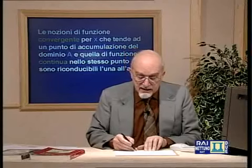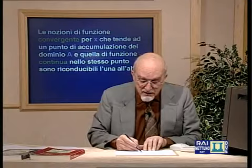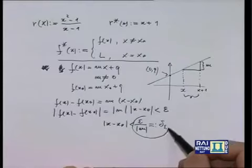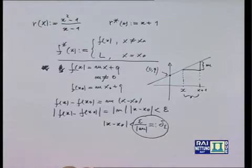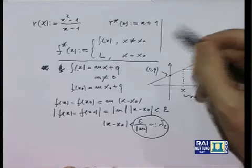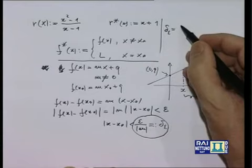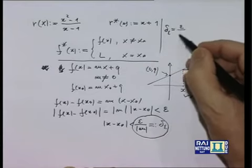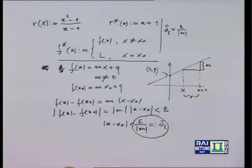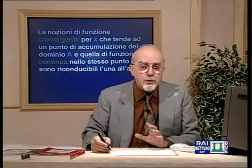Può essere interessante dedicare 30 secondi a considerare questo risultato: delta(epsilon) = epsilon / |m|. Dunque, a parità di epsilon, questo delta(epsilon) è tanto più piccolo quanto più m è grande in valore assoluto.